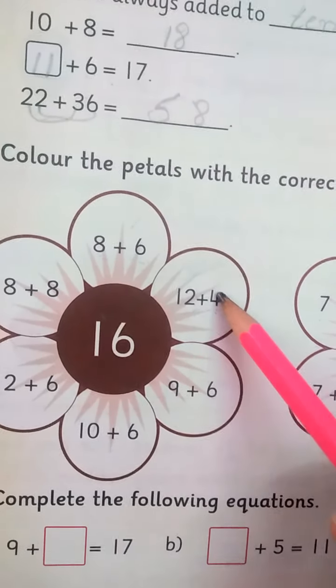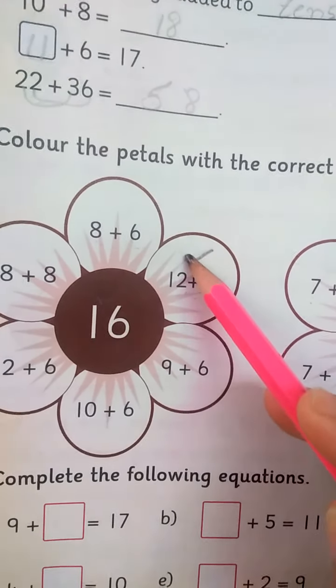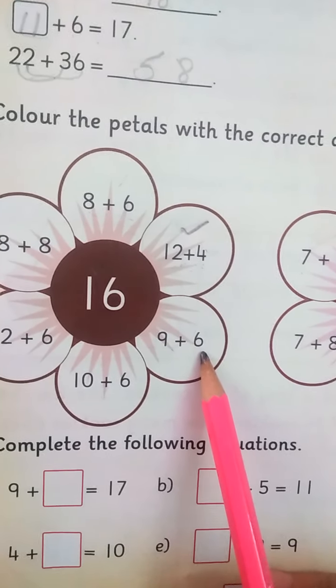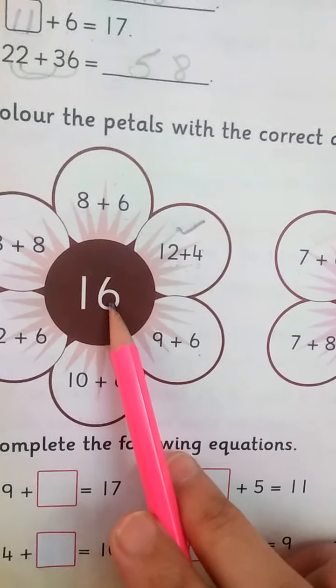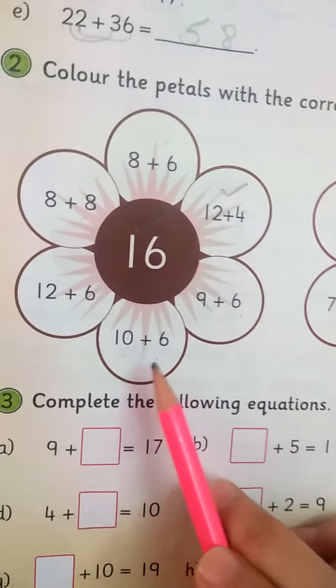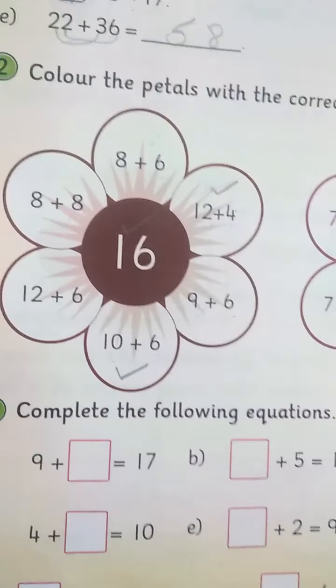12 plus 4 equals 16. 9 plus 6 is equal to 15, not 16. 10 plus 6 is equal to 16, it means correct, next.